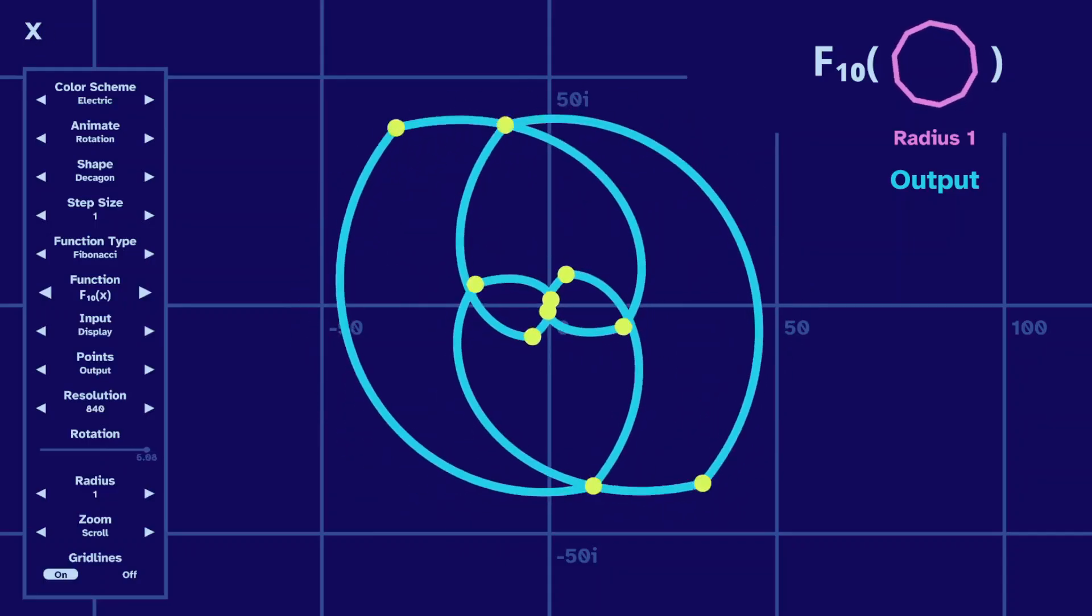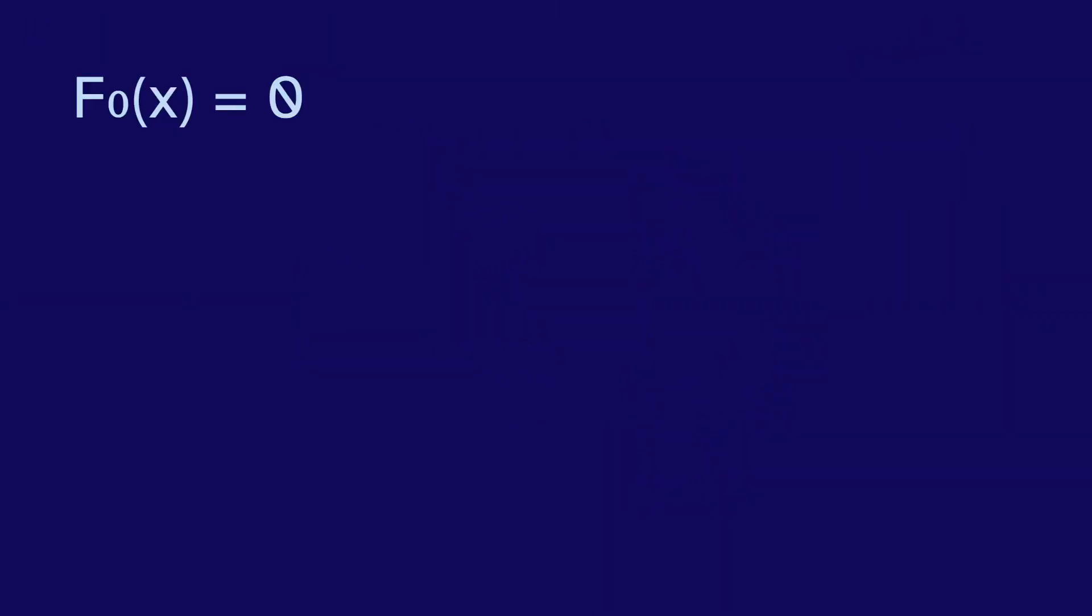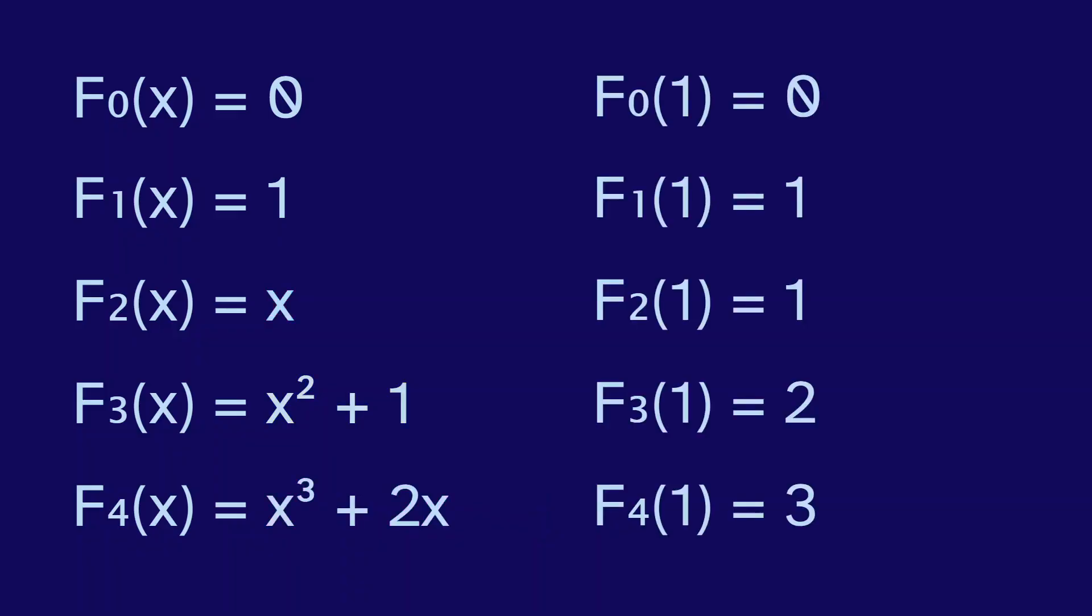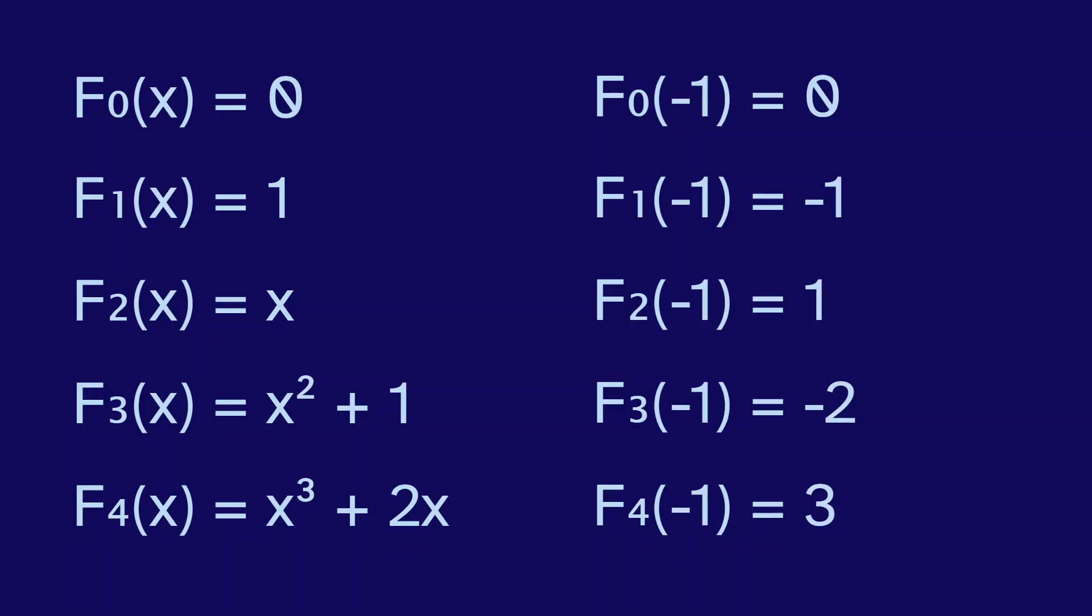The Fibonacci polynomials are similar to the Fibonacci numbers. We start with 0, then 1, and then add them together to get the next one, except we multiply the latter by x. So the second Fibonacci polynomial is just x, then the third is x squared plus 1, and then x cubed plus 2x. And because of the setup, if we take 1 as an input to the Fibonacci polynomials, we get the Fibonacci numbers. But if we input negative 1, they jump back and forth from negative to positive.